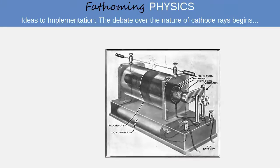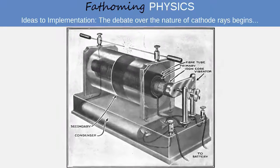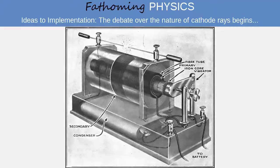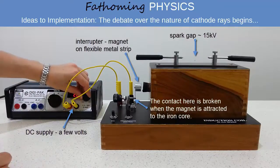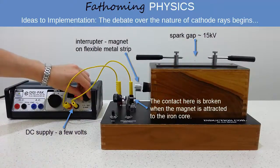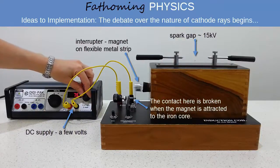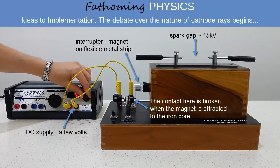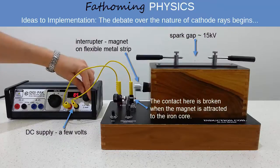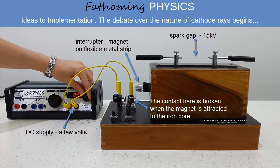As you know from the previous topic, transformers can step up AC voltages, but the input to an induction coil is DC. The trick used to produce AC is to use a magnet on a flexible metal strip as an interrupter switch. In its rest position, it allows current to flow to the primary coil. However, as the current increases, the magnet is attracted to the iron core, and this switches off the current, which then dies down until the magnet moves back to its rest position, switching the current on again and repeating the cycle.